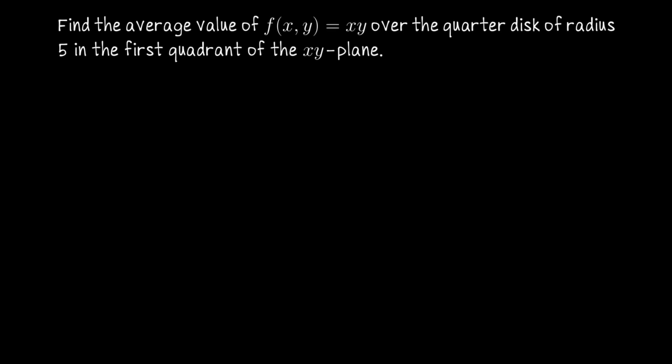In this exercise we are asked to find the average value of the function f(x,y) equals xy over the quarter disk of radius 5 in the first quadrant of the xy-plane.